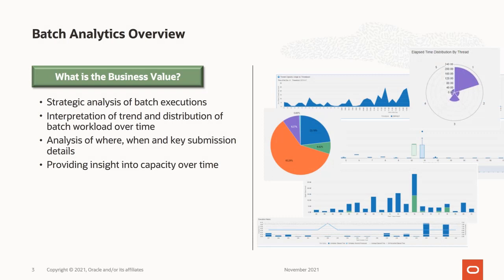The Batch Analytics feature has been added so that customers can strategically analyse their batch workload over time. This allows customers to detect trends, detect anomalies and better understand the distribution of the batch workloads. The key analysis looks at history of batch processing at various levels over time to help appreciate not only what was run, but when it was run, where it was run and what method was used to initiate the workload. This can be key in assessing your workload to better make use of your cloud capacity in a more cost-effective way.